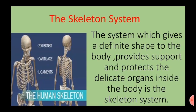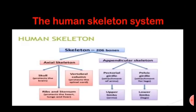The system which gives a definite shape to the body, provides support and protects the delicate organs inside the body is the skeletal system. The skeletal system includes all of the bones joined in the body. Each bone is a complex living organ made up of many cells, protein fibers and minerals. The skeleton acts as a scaffold by providing support and protection for the soft tissues. It also provides attachment points for muscles to allow movements at the joints. New blood cells are produced by the red bone marrow inside our bones. Bones act as a body warehouse.